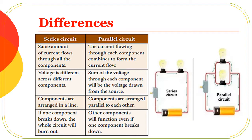In a series circuit, all components are arranged in a line. In a parallel circuit, all components are arranged in parallel to each other. In a series circuit, if one component breaks down, the whole circuit will fail. In a parallel circuit, the other components will continue to function even if one component breaks down.